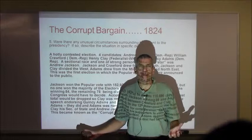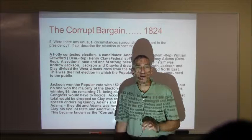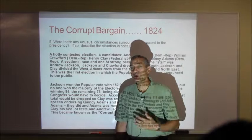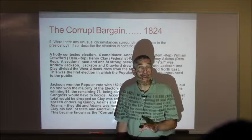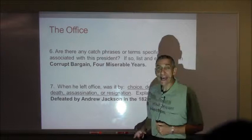Once Quincy Adams becomes president, he turns around and makes Henry Clay his Secretary of State. As a result, Andrew Jackson says there's been some kind of corrupt bargain — some kind of deal, clearly. Andrew Jackson goes on a four-year warpath against Quincy Adams. That's how Quincy Adams becomes president. We don't know if that bargain actually occurred; it certainly seems to be the case, and Andrew Jackson certainly thought it was.